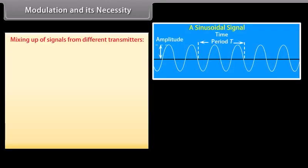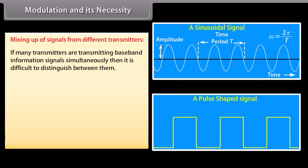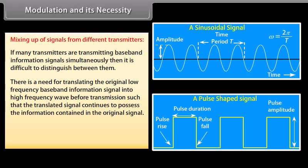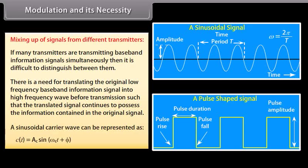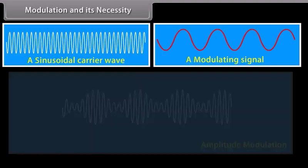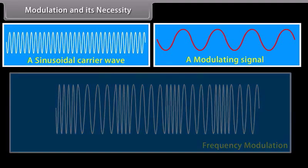If many transmitters are transmitting baseband information signals simultaneously, it is difficult to distinguish between them. There is a need for translating the original low frequency baseband information signal into a high frequency wave before transmission, such that the translated signal continues to possess the information contained in the original signal. A sinusoidal carrier wave can be represented as C(t) = Ac sin(ωct + φ). There are three types of modulation: amplitude modulation, frequency modulation, and phase modulation.